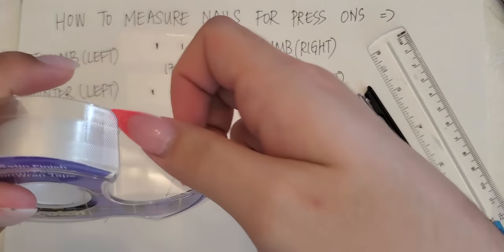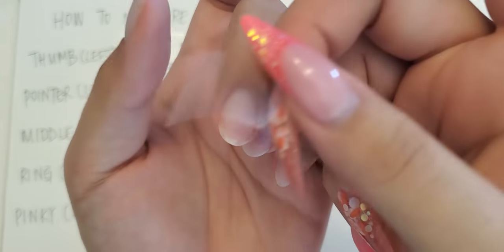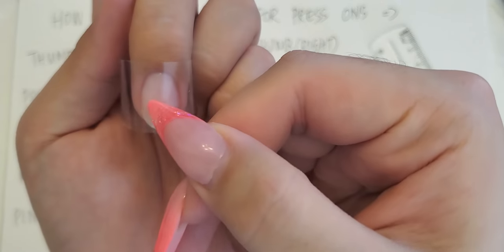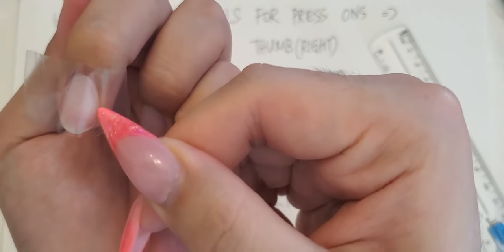So first thing, take your tape. You don't need a lot, just a small amount of tape. You're gonna place it on your finger like so, but you have to make sure it's pressed all the way down from one side wall to the other side wall.